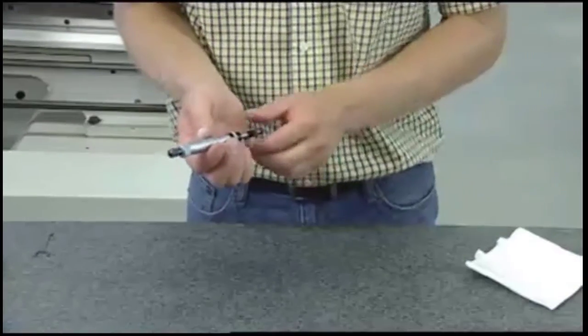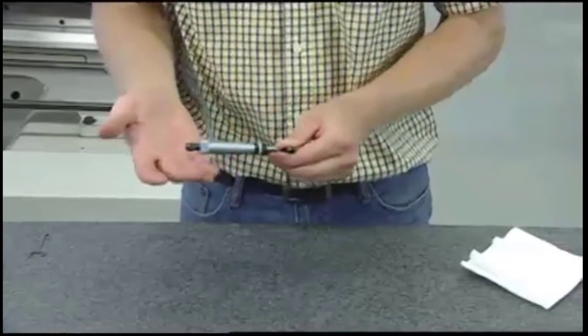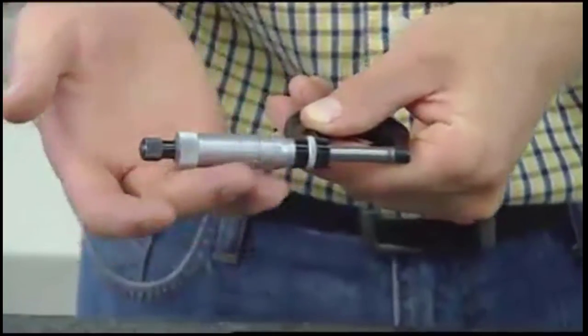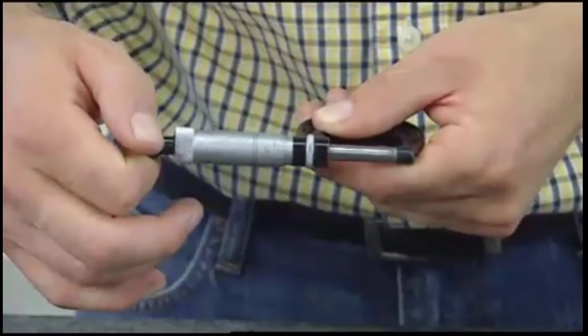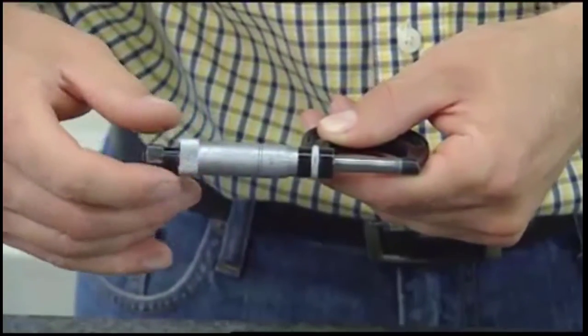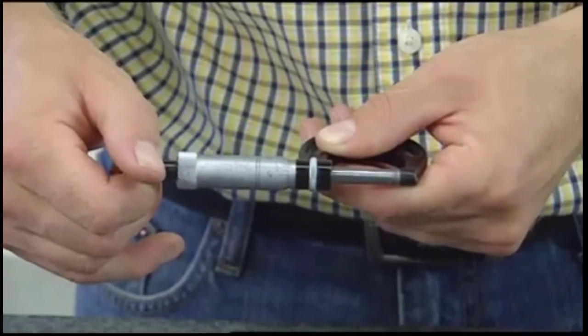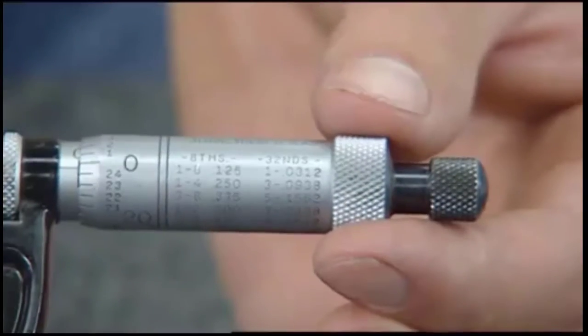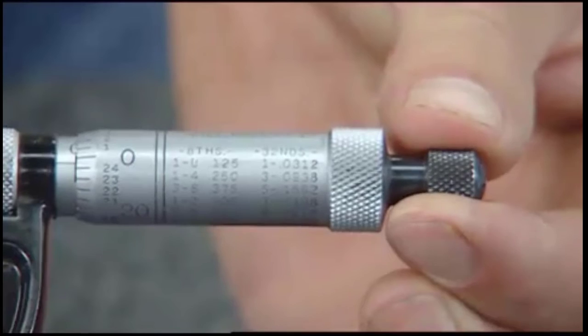Then close the micrometer spindle under the same amount of pressure as you would to inspect a dimension. Check to see if the micrometer is zeroed by examining the graduations on the thimble and sleeve. If the zero marks are not aligned, you will need to make an adjustment.